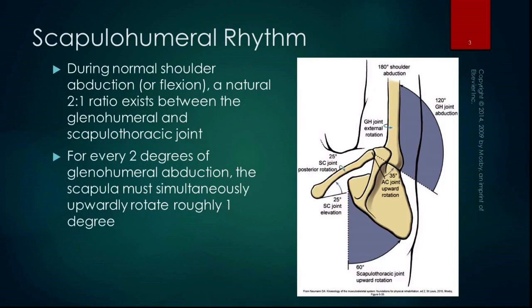The scapulohumeral rhythm: during normal shoulder abduction or flexion, there is a natural two-to-one ratio between the glenohumeral and scapulothoracic joints. For every two degrees of glenohumeral abduction, the scapula must simultaneously upwardly rotate roughly one degree. So you get 120 degrees of glenohumeral abduction plus 60 degrees of scapulothoracic upward rotation, which adds up to 180 degrees of shoulder abduction — a two-to-one ratio.